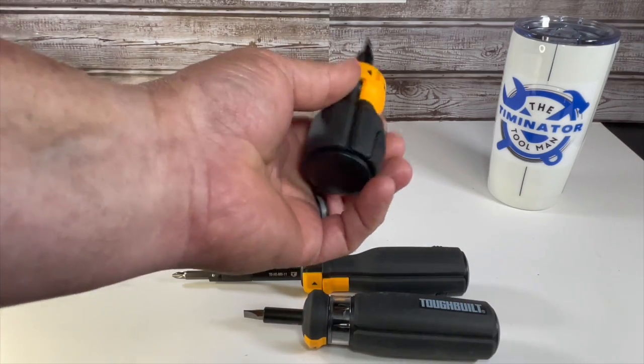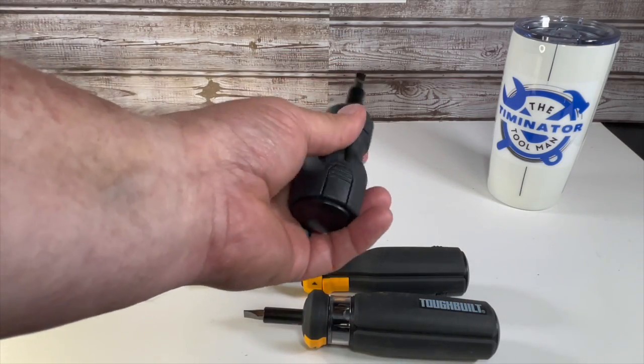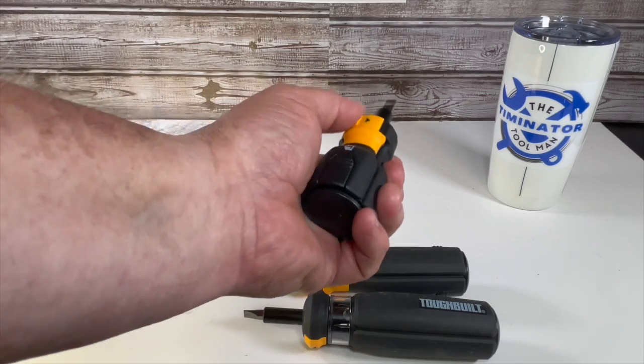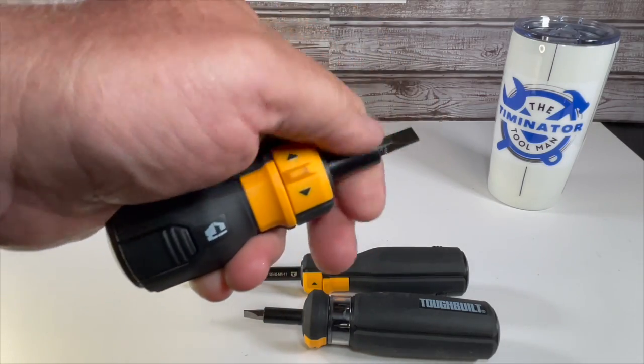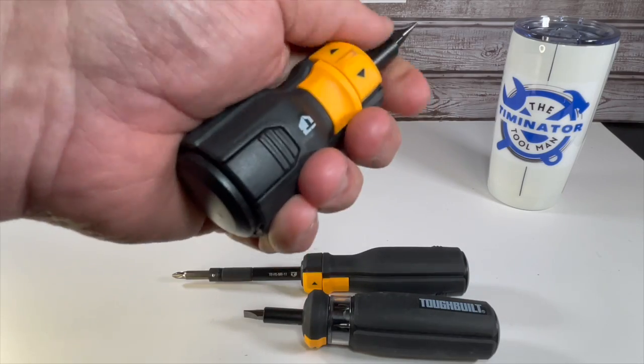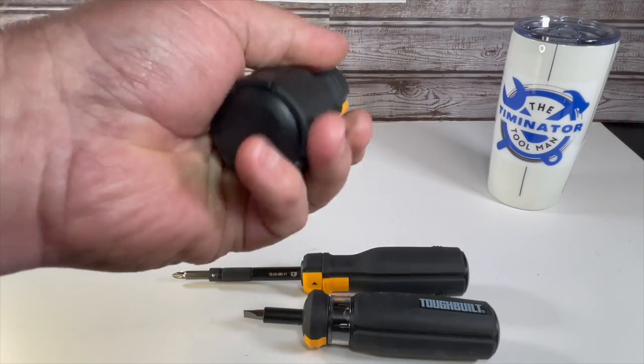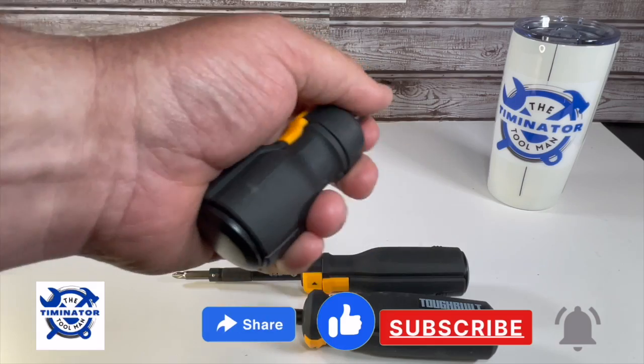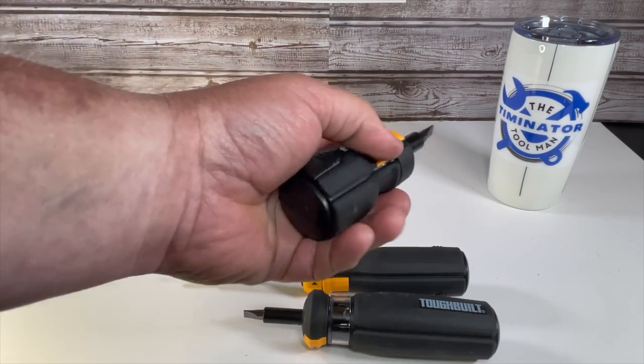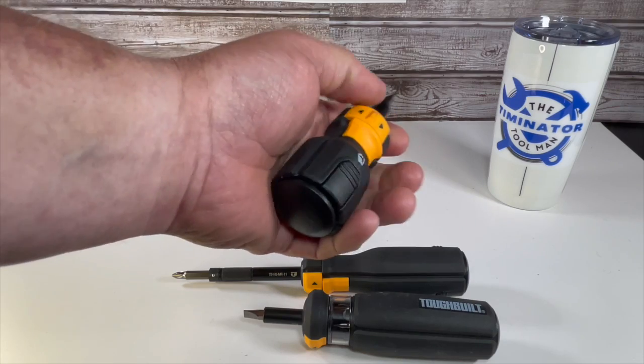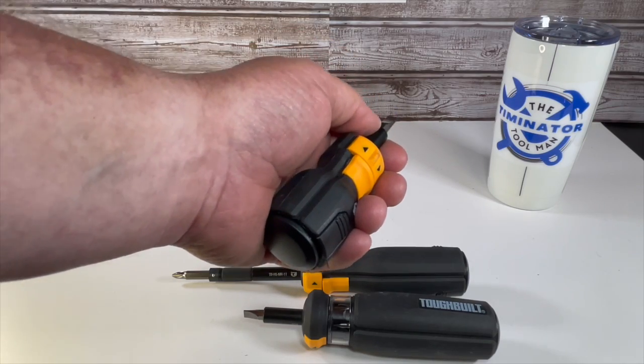So this is the Toughbuilt stubby ratcheting driver. It also ratchets like this one. And you probably hear that. It's got a really nice handle to it. Kind of the rubberized, all these, all three of these have the rubberized deal. This stubby is the TBH5MR30.